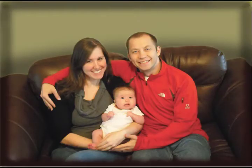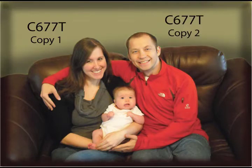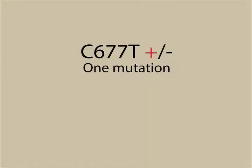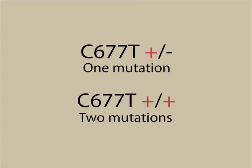There are two copies of each gene, one from your mother and one from your father. If you have one mutated copy, it's written as C677T plus minus. If you have two mutated copies, it's written as C677T plus plus. The more mutations you have, indicated by the plus signs, the worse your function in that area.